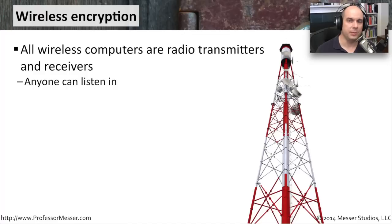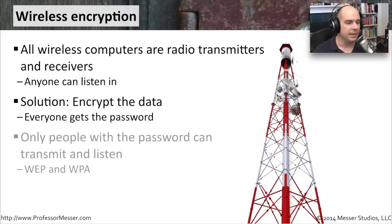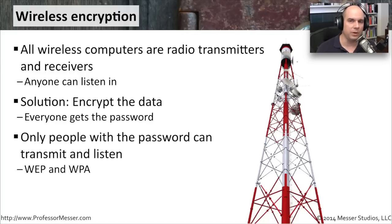Encryption over wireless technology becomes really important because wireless technology uses radio waves, making it very easy for anybody to listen in on the right frequency and see what's going on on your network. The solution has always been to encrypt the data sent over these airwaves, ensuring only people with the password can make sense of what's going on.